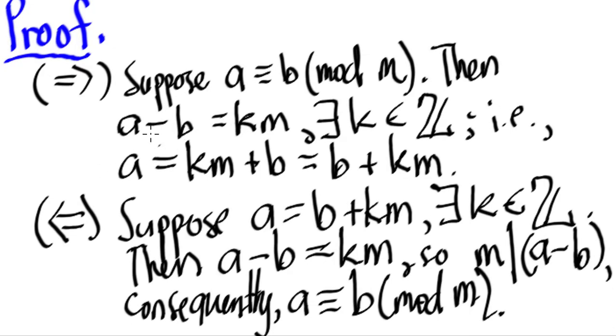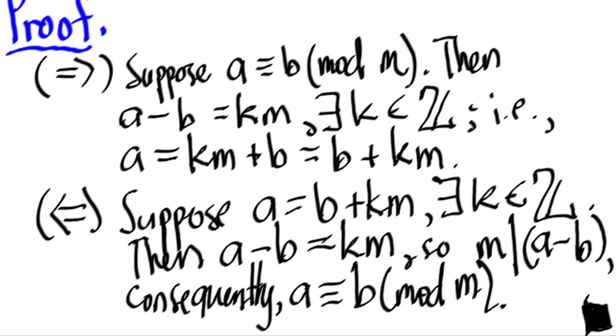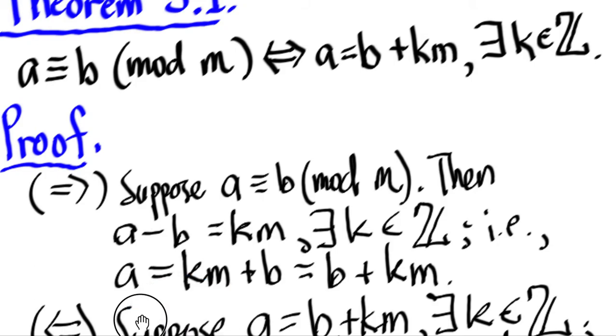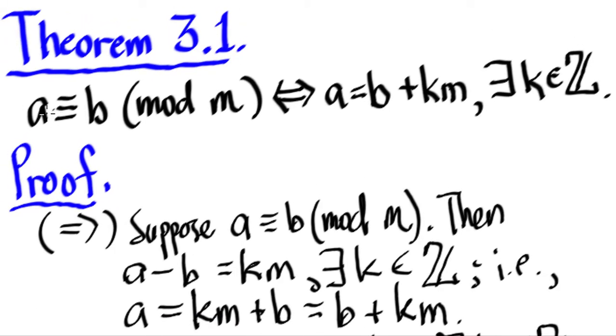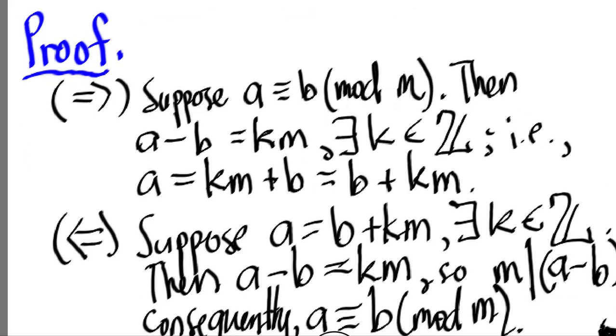By the statements we've shown here, we've shown the if and only if statement. So therefore, this ends the proof. Indeed, we can say that if we have this statement, A is congruent to B mod M, we can restate that as A equals B plus KM for some K in the integers.